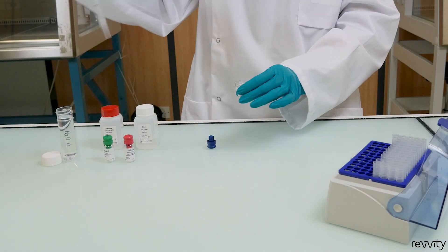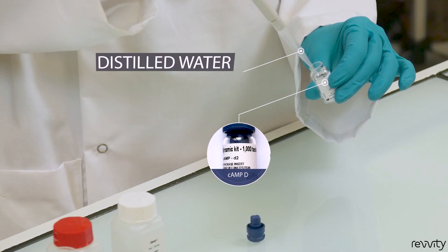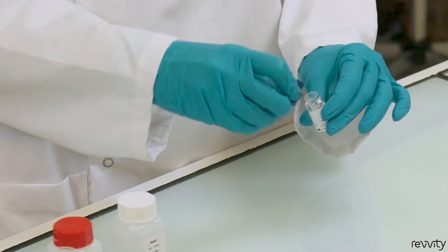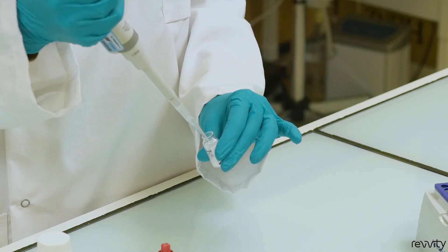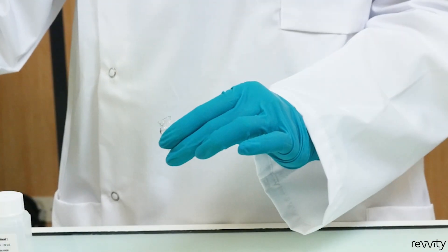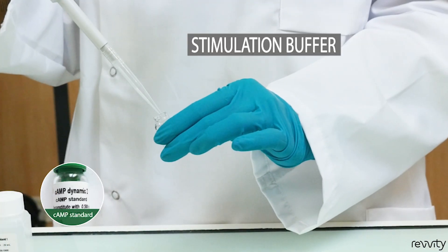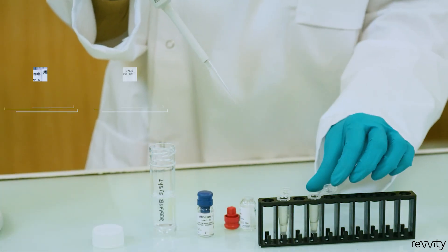Let's start now. First, prepare a stock solution by reconstituting the cyclic AMP antibody and labeled cyclic AMP in distilled water. Then, reconstitute your standard using stimulation buffer. You now have 5X stock solutions that can be aliquoted and frozen for future use.